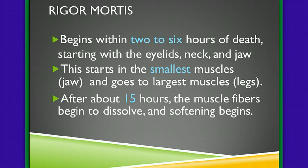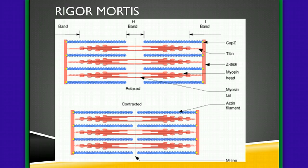It then goes to larger muscles like the leg muscles. After about 15 hours, the muscle fibers begin to dissolve and softening begins. Remember, it's the myosin and actin fibers that are actually contracting, and it's because of the release of calcium ions.